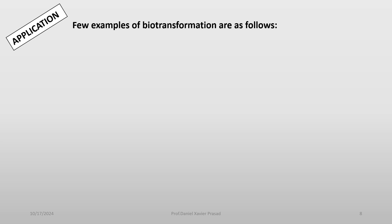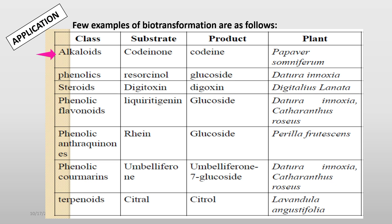A few examples of biotransformations are as follows. Alkaloids: codeinone as a substrate, the product codeine can be obtained in Papaver somniferum. Phenolics: resorcinol glucoside as a product obtained from a substrate in Datura inoxia. Steroids: digitoxin as a substrate giving digoxin as the product in Digitalis lanata.